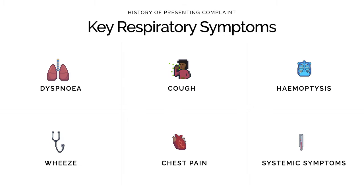Let's now look at some of the key respiratory symptoms you may come across. Top of the list is dyspnea or breathlessness. Other common symptoms include cough, which may be associated with haemoptysis or coughing up blood, wheeze, chest pain, or systemic symptoms such as a fever.